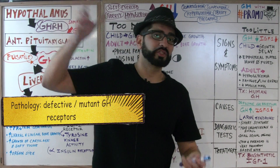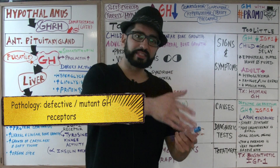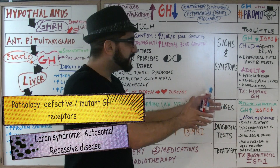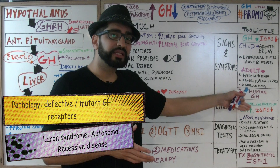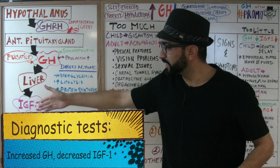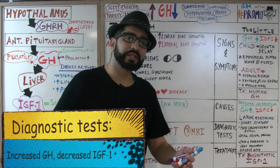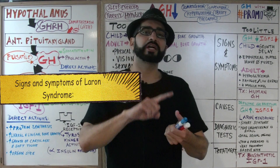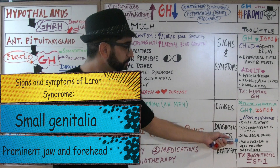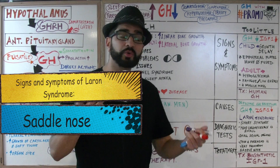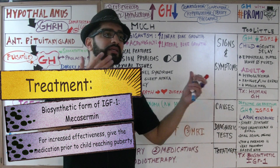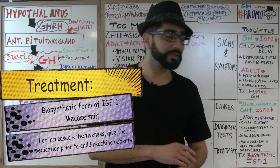The second category of GH deficiency is Laron syndrome, where growth hormone is released normally but the growth hormone receptors are defective. The liver cannot produce IGF-1, so there is a deficiency in insulin-like growth factor 1. A child with Laron syndrome presents with small head circumference, short stature, small genitalia, prominent jaw, prominent forehead, and saddle nose. Treatment is a biosynthetic form of IGF-1 called mecasermin, which must be given before the child reaches puberty.